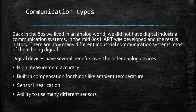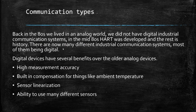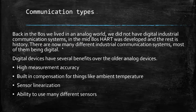Back in the 80s, we lived in an analog world — we did not have digital communication systems. At that same time, HART was developed and the rest is history. Now there are many different industrial communication systems, and most of the newer ones are digital. That said, lots of major facilities are still running twisted pair point-to-point wiring for their control systems. But a lot of newer facilities are going to digital networking and field bus type protocols, and that's what we're going to be talking about mostly in this course.